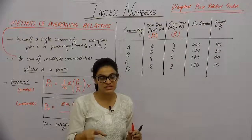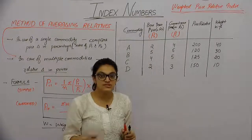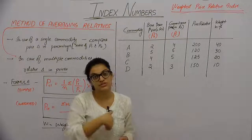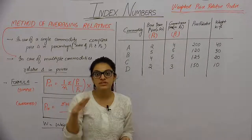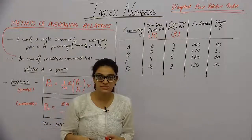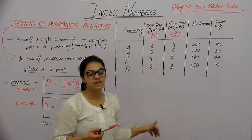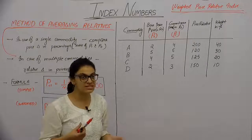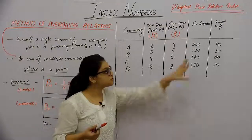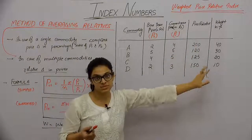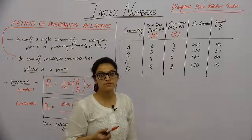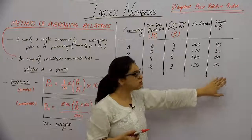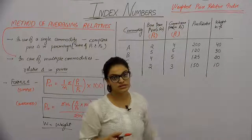We can also take weights from the base period. Generally the base period is preferred for weights because calculating weights every year is very difficult. The relative weight calculation is a bit difficult to do annually, so generally weights are preferred to be based in base period terms. In a numerical problem, weights will typically be given directly for you to put into the formula.